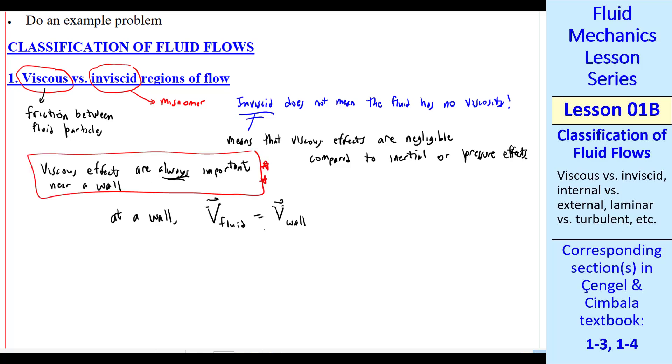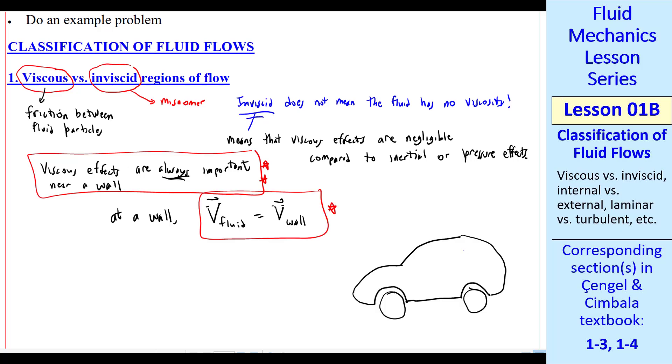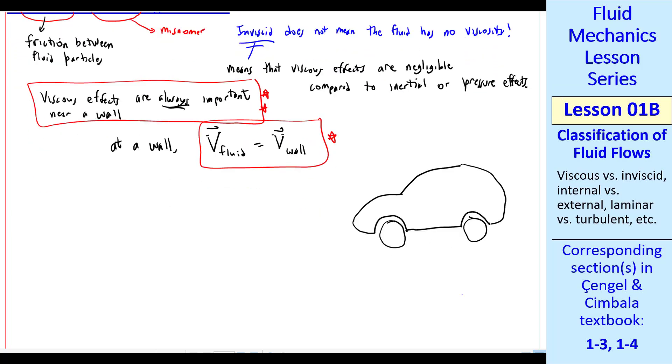It turns out that at a wall, the velocity of the fluid must equal the velocity of the wall. Consider, for example, a car that's moving at v_car equal 60 miles per hour. At any point along this wall, the body of the car, v of the air right at any of these points along the wall must be identical, namely 60 miles per hour.